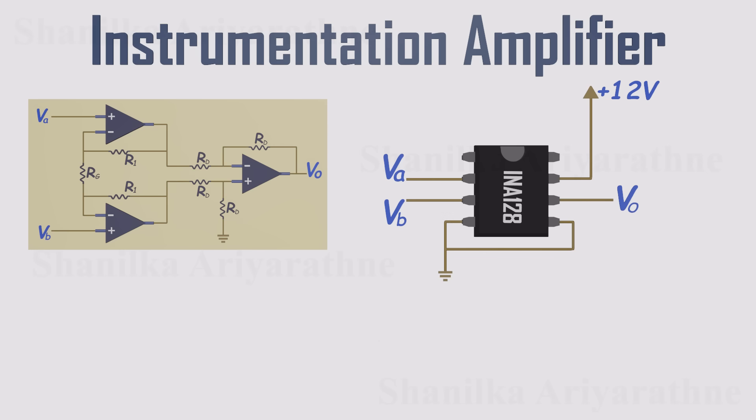And just like we want, the output is simply the gain multiplied by the difference between the two input signals. The gain is set by a single resistor connected between pins 1 and 8. That's it! No juggling multiple resistors to keep ratios balanced.